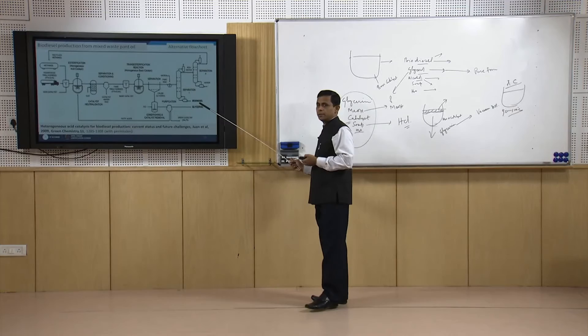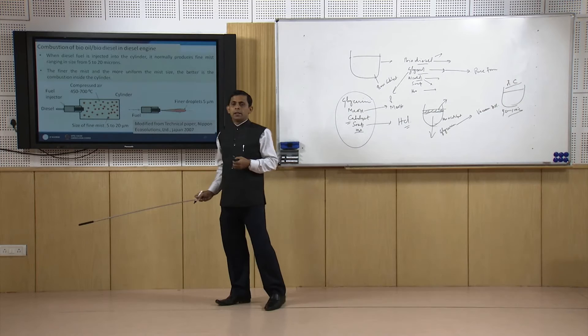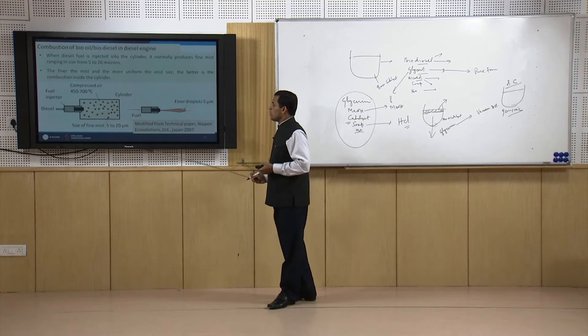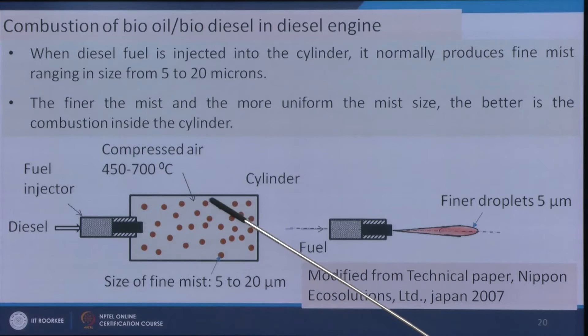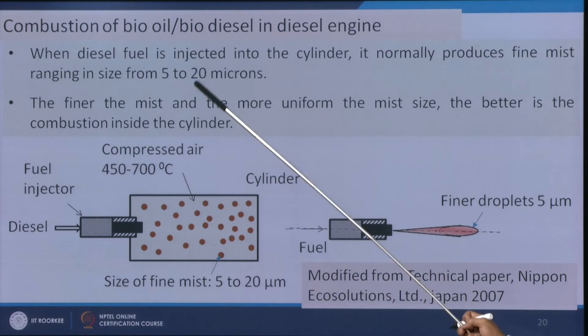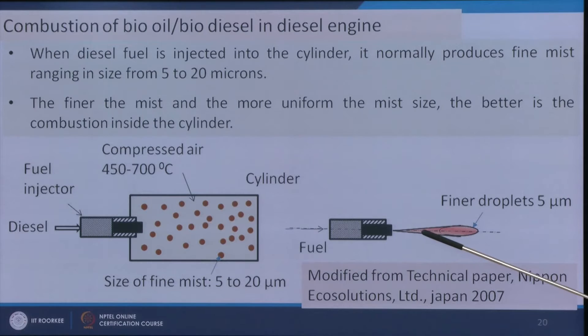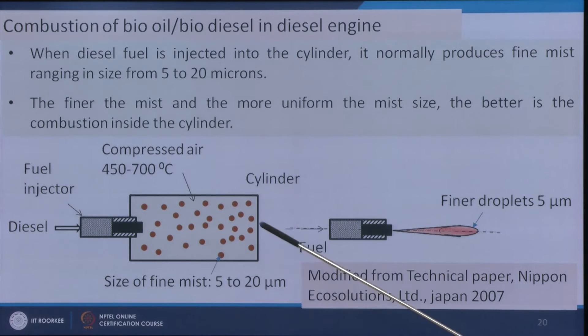Now we will discuss how biodiesel can be combusted or used in diesel engines. In a diesel engine, when fuel is injected through nozzles into the cylinder, droplets are formed in the 5 to 20 micron range. However, if we use biodiesel, its high viscosity means the droplet size will be larger: the nozzle will not spray it as efficiently, and if atomization does occur, the droplet diameter will be higher.